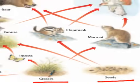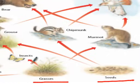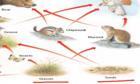Looking at the grasses, we see two arrows flowing from them — one going to the insects and one to the marmot. We need to check if these consumers have any other arrows coming to them. The marmot has no other arrows pointing at it, just the one from the grasses. So the energy from the grass goes to the marmot, making it a third herbivore.